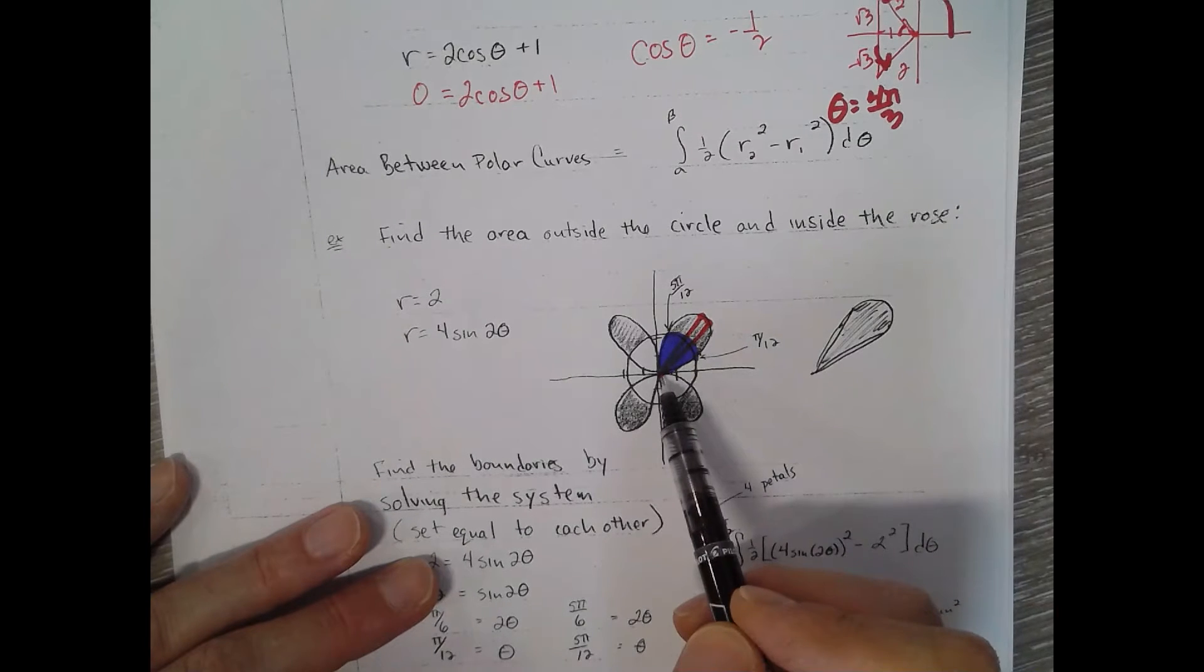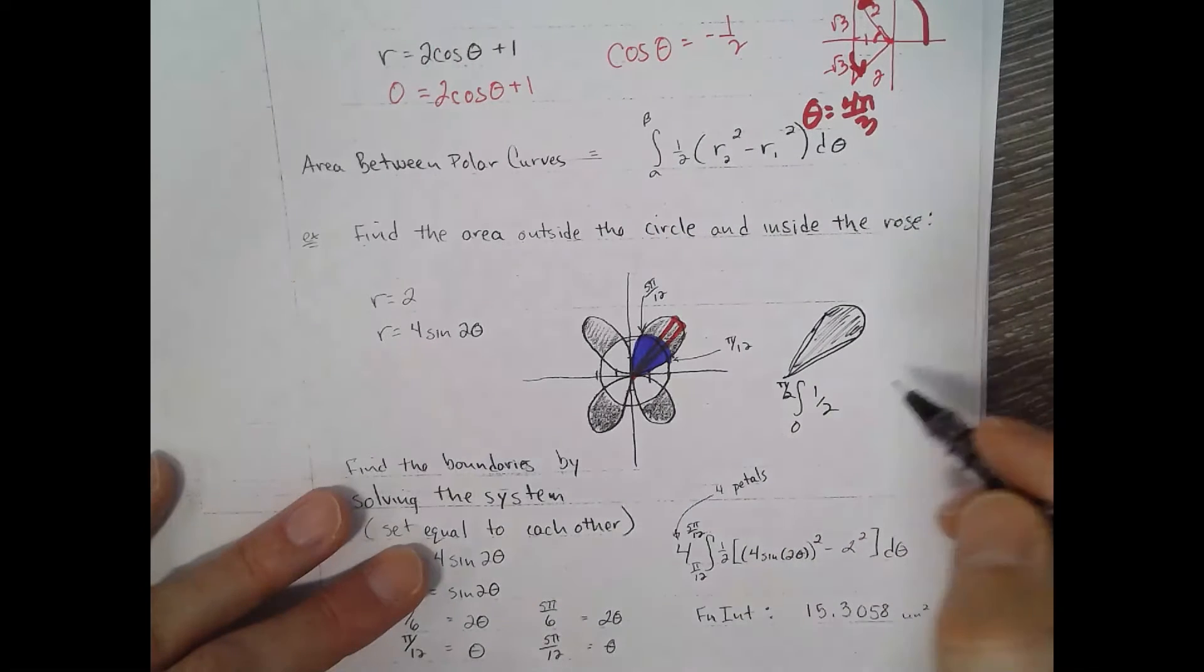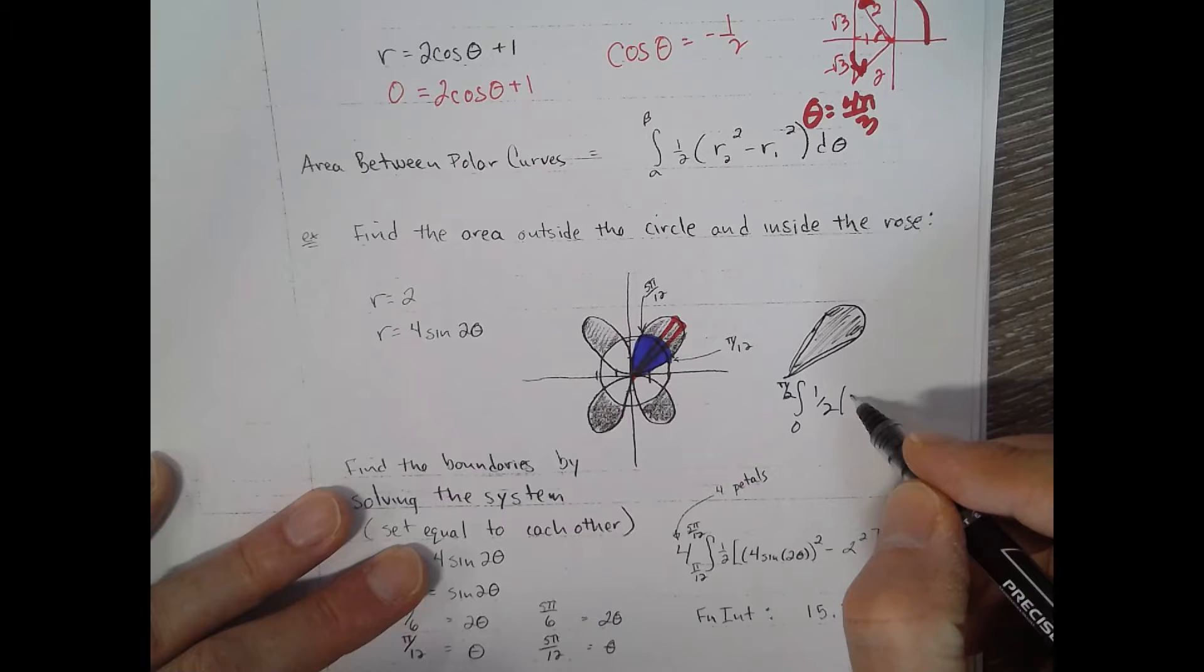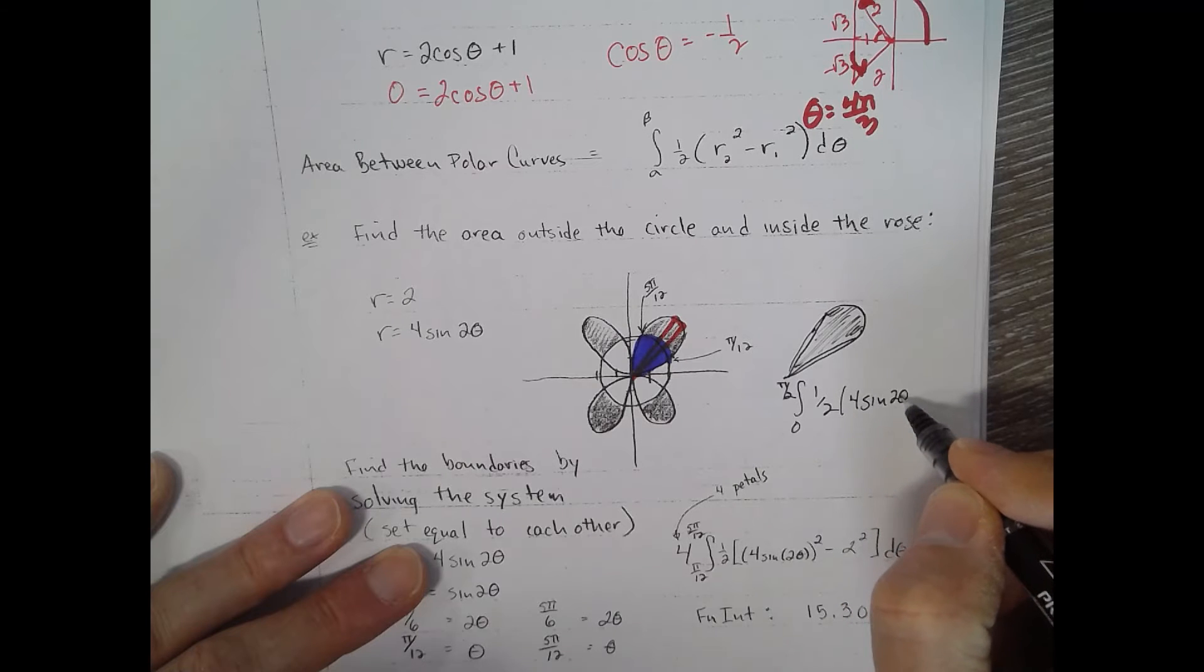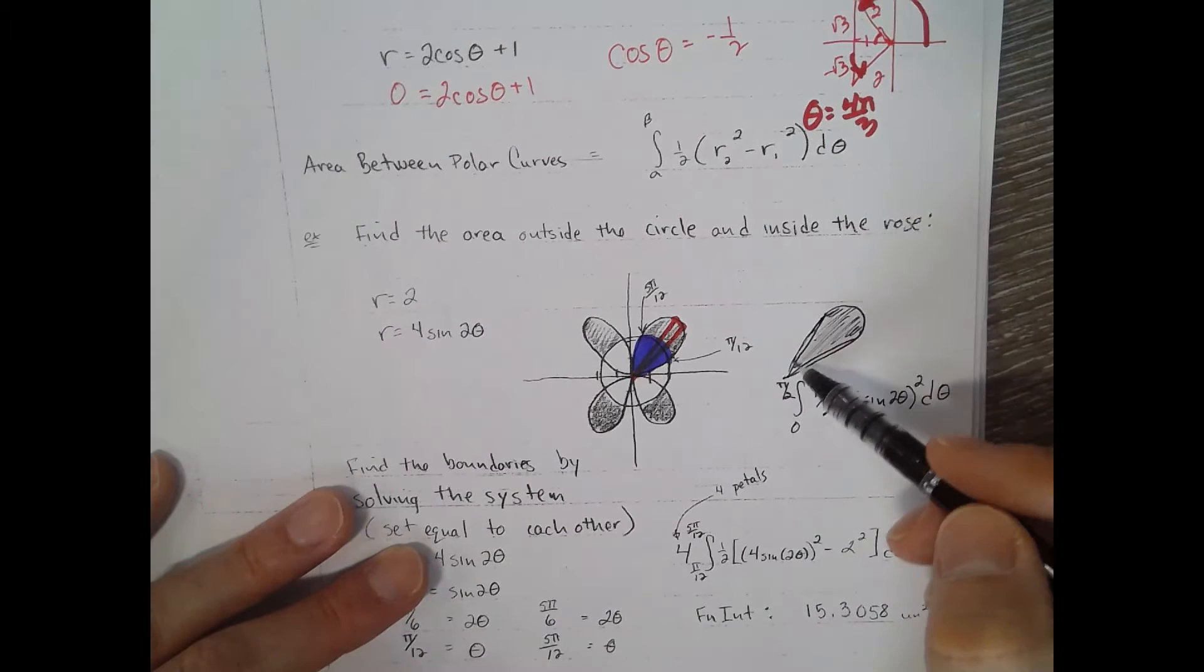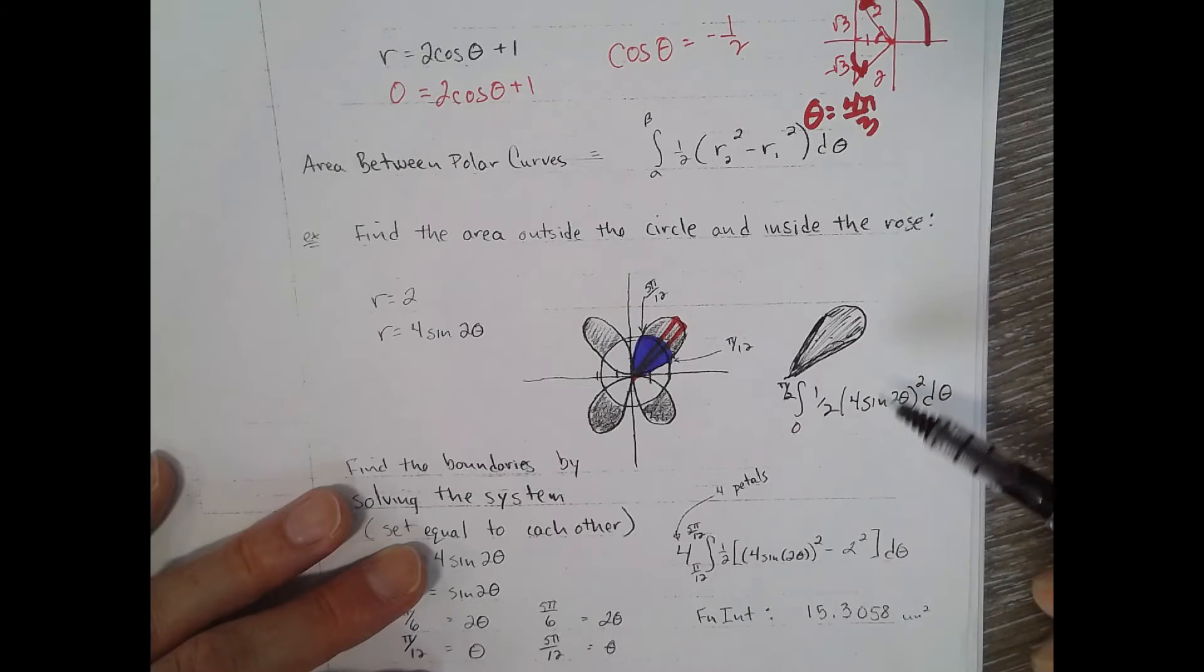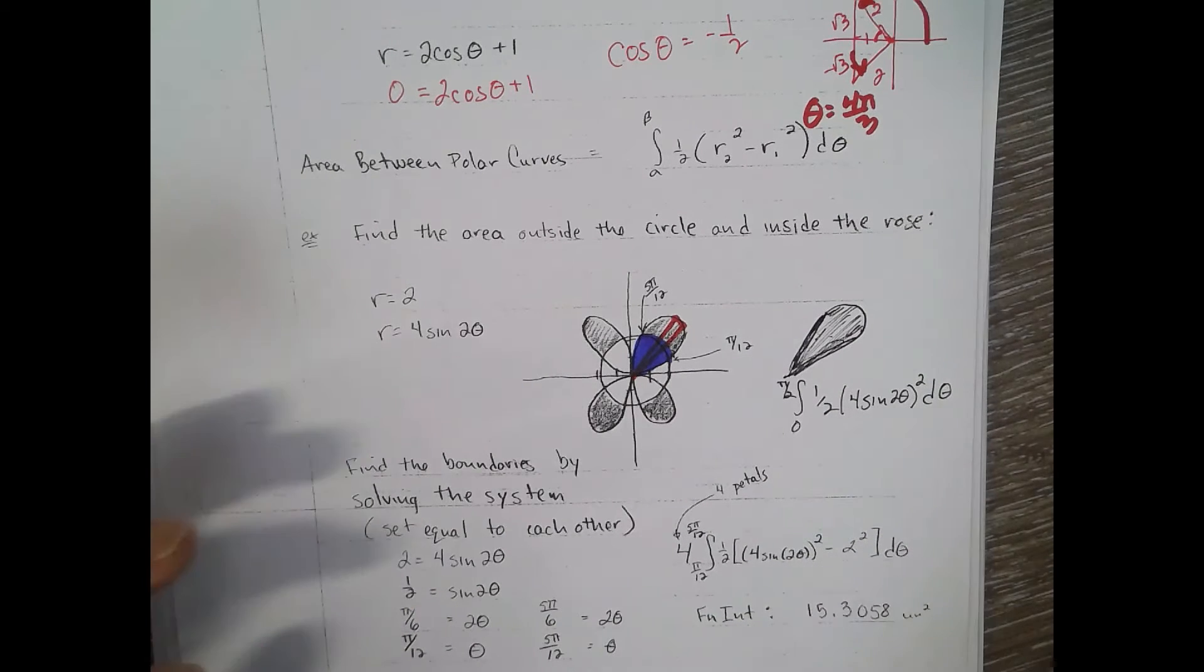So you integrate from 0 to pi over 2, one half r, which is 4 sine of 2 theta squared d theta. That will give you the entire sector, or not sector, petal. So that minus the one down below would get you the blue area.